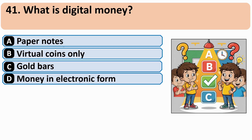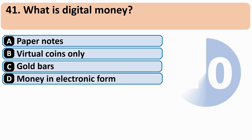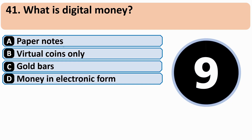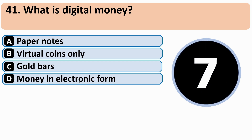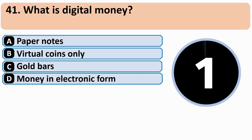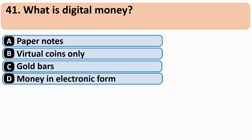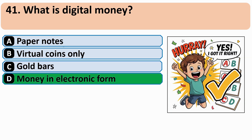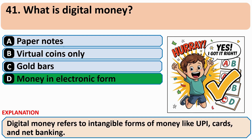What is digital money? The correct answer is D — Money in electronic form.